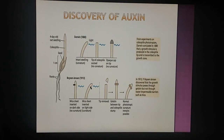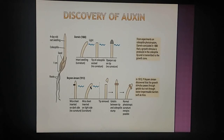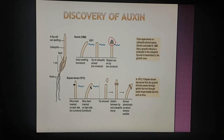Now let's talk about the discovery of auxin. Darwin in 1880 worked on canary grass and observed that young seedlings bend toward the side from which light is coming. When the coleoptile tip was covered, no bending was observed. He concluded that something is produced inside the tip which diffuses to the growing region and shows growth there.